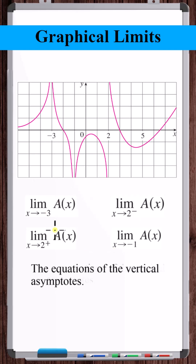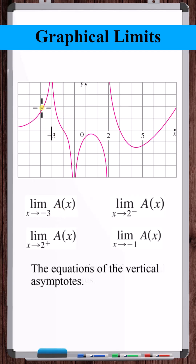Let's evaluate these limits for this function a of x. The limit as x approaches minus 3 of a of x. Here's minus 3. As x approaches minus 3 from the left, a of x is approaching infinity, and as x approaches minus 3 from the right, a of x is also approaching infinity. So this limit is equal to infinity.